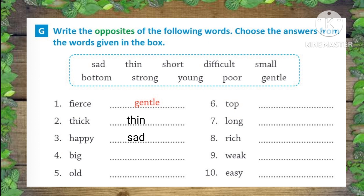3. Happy — sad. 4. Big — small. 5. Old — young.